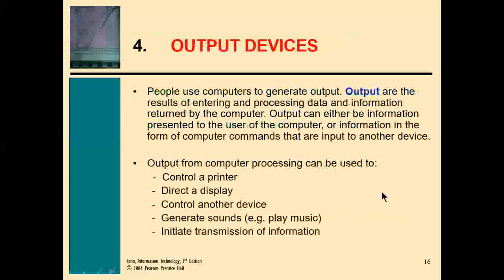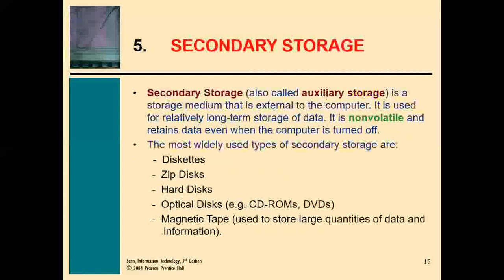Output devices — as a noun — refer to the information given out; as a process, it is giving out information that has been processed. Examples of output devices include printers and speakers. Secondary storage is needed because primary storage loses its content when power is removed, so we need something that keeps data for a long time. Examples include diskettes, optical discs, CDs, and DVDs.